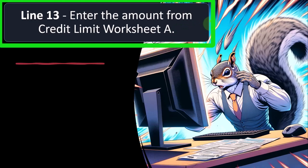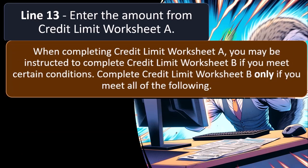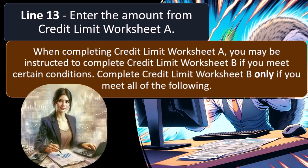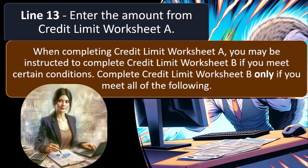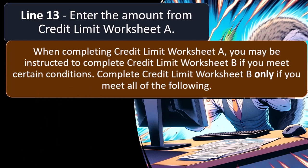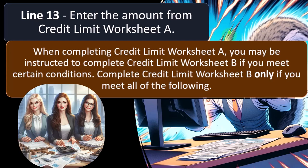Line 13: enter the amount from Credit Limit Worksheet A. We're going to have limitations on the credit. The non-refundable portion has a problem if tax liability goes below zero, and there's also a high-income phase-out threshold. Tax software can help with these calculations. We'll do a tax software example in future presentations, but you want a general idea of what the schedules are doing so you can explain it to clients and double-check data input.